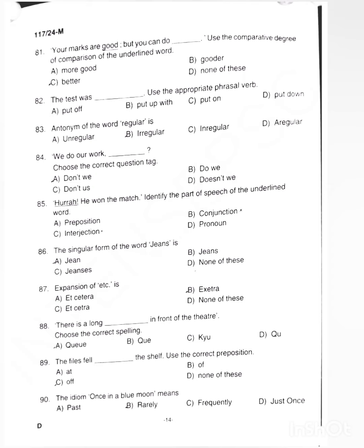Next question. Antonym of the word regular. The opposite of regular is option B, irregular.